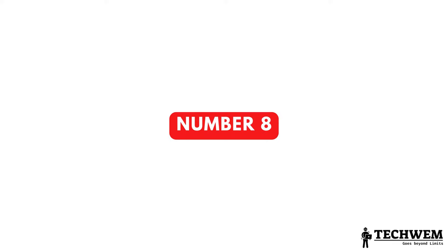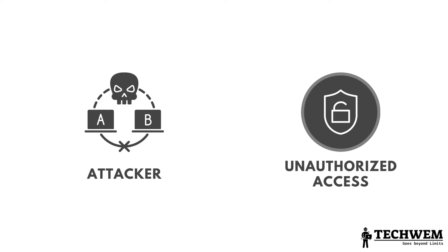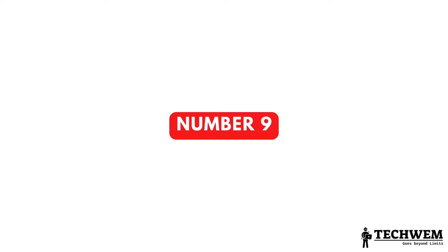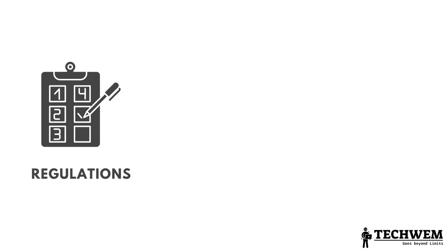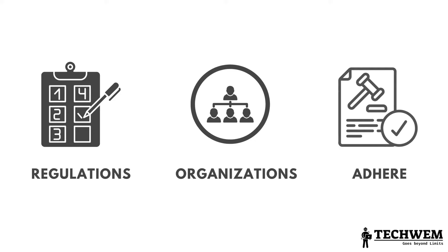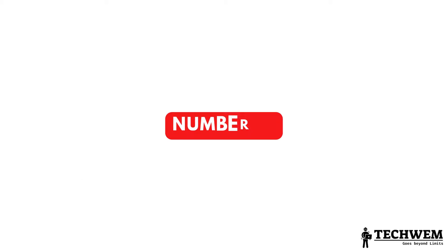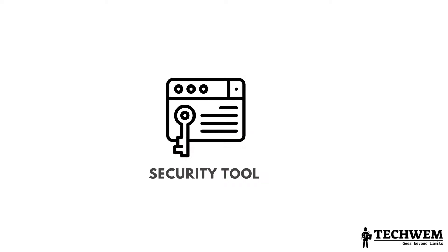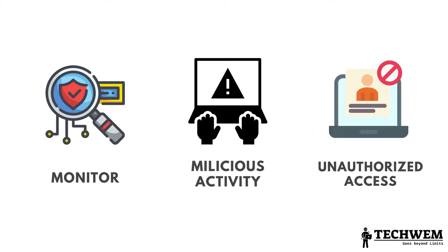Number 8: Vulnerability — a weakness or flaw in a system or network that can be exploited by attackers to gain unauthorized access, disrupt operations or compromise data integrity. Number 9: Compliance Standards — industry-specific regulations or guidelines that organizations must adhere to in order to ensure the security and privacy of their OT systems. Number 10: IDS, Intrusion Detection System — a security tool or software that monitors network traffic and detects potential malicious activities or unauthorized access attempts.